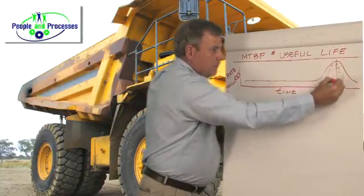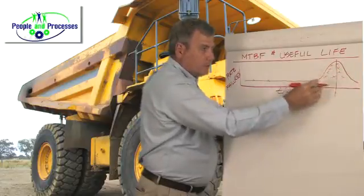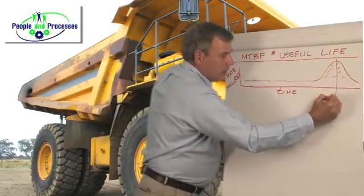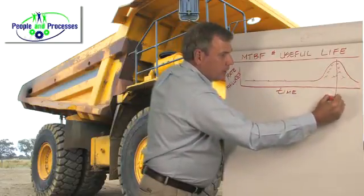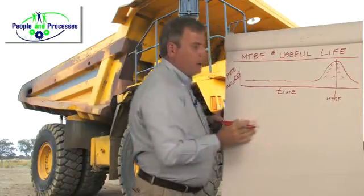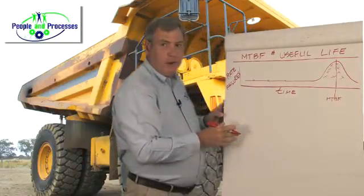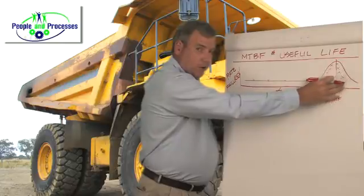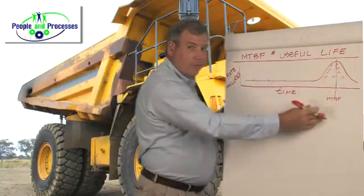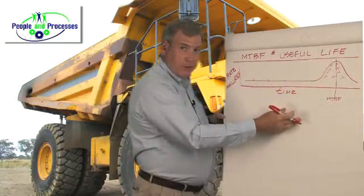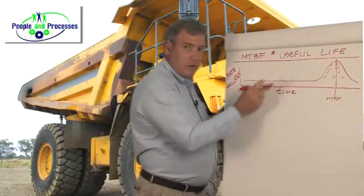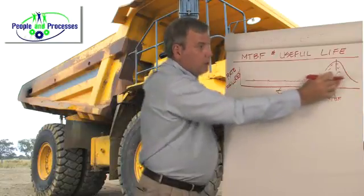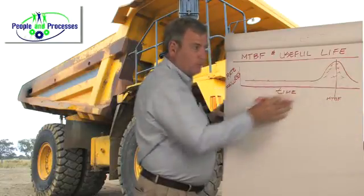This point right here — the average of this bell curve, or this normal distribution — is actually our MTBF, our Meantime Before Failure. It didn't say that this is where all the failures occurred; it just said this is where the average of the failures is. We could have random failures all across the distribution, but this is where the greatest bulk of the failures are.